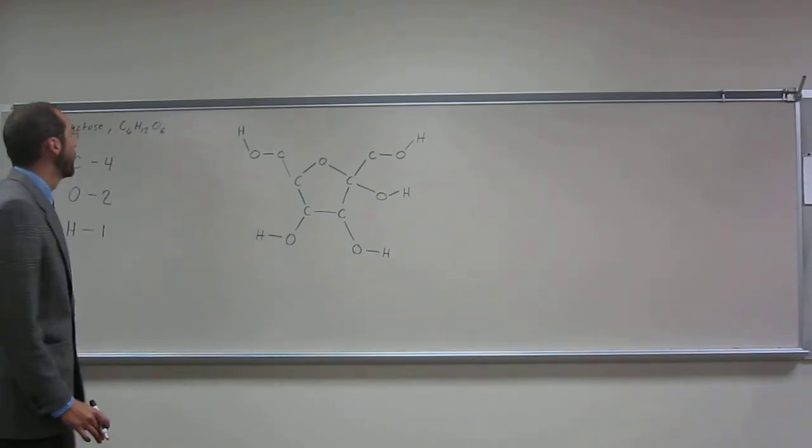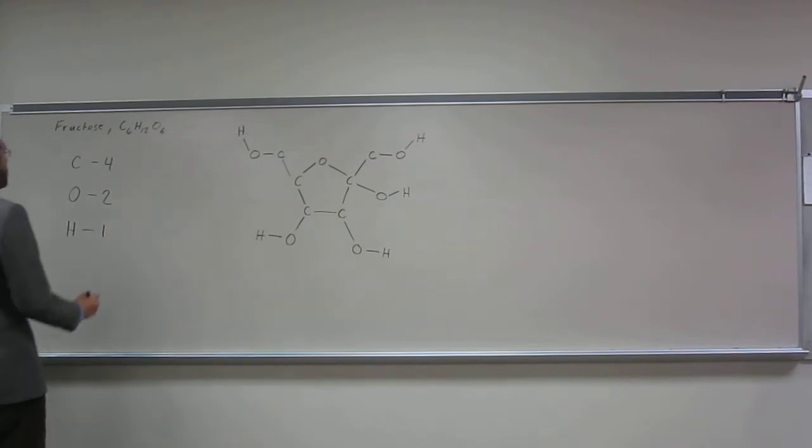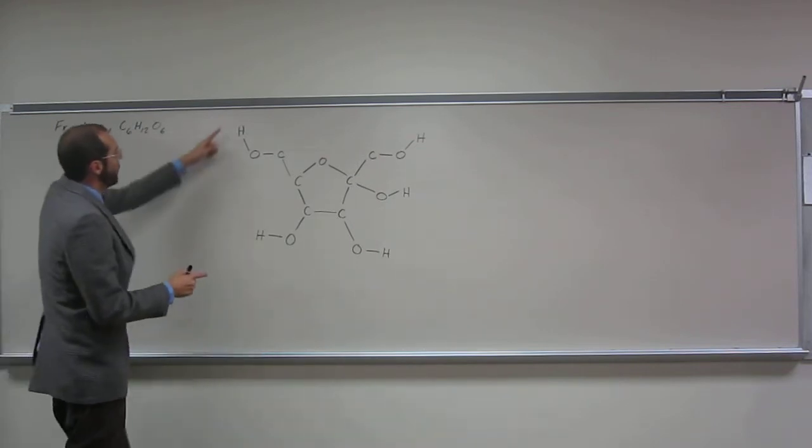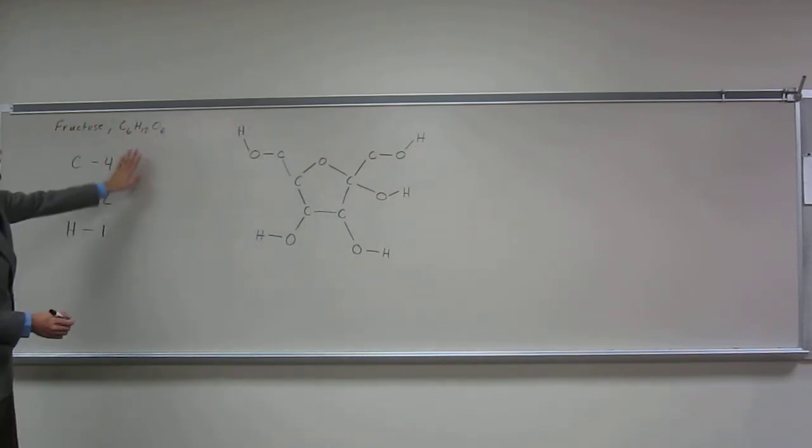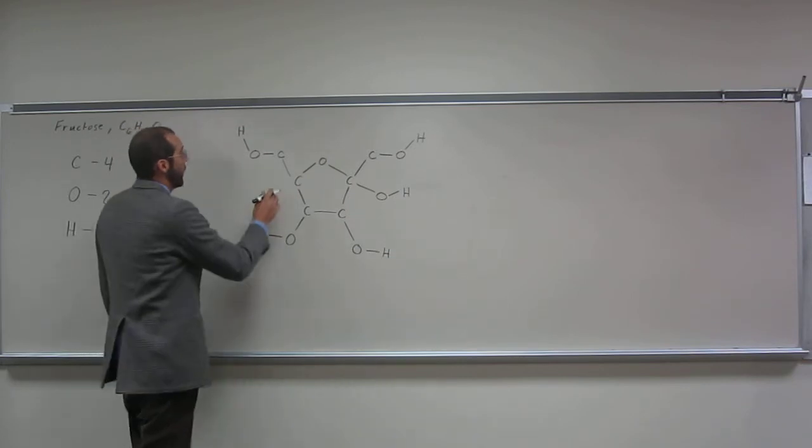Okay, so now, and we have one, two, three, four, five hydrogens gone, so we need seven more hydrogens. Let's look for carbons that don't have four bonds.